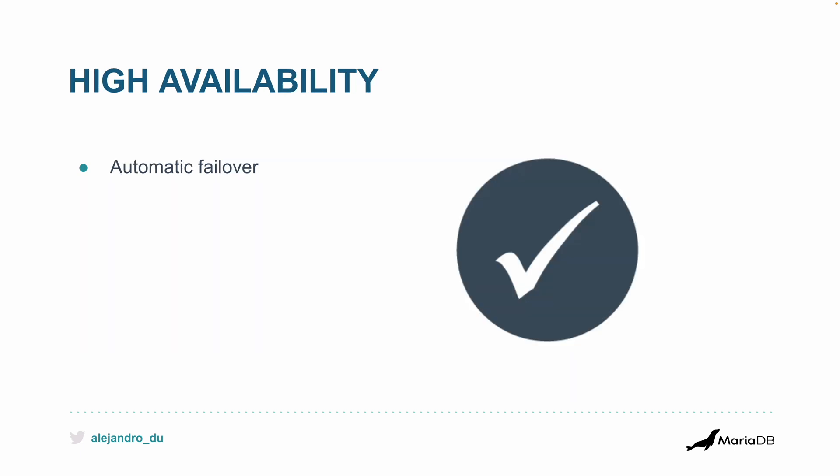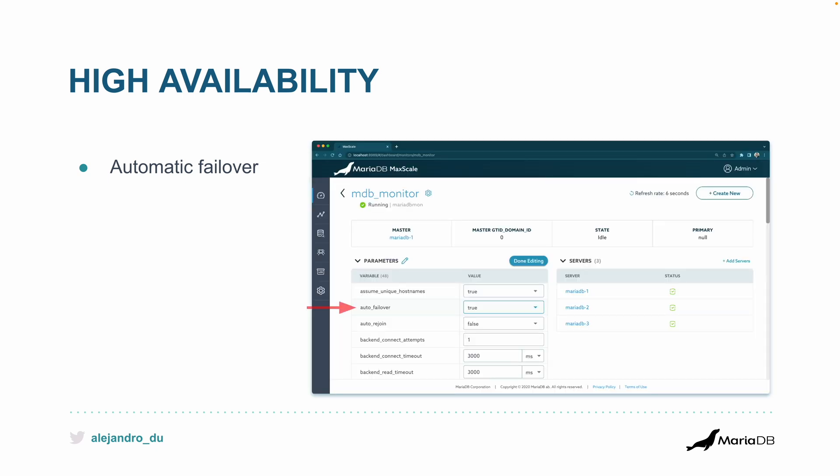On the high availability front, we have automatic failover. When a primary node fails, another one gets promoted as a new primary. That's configured in the GUI — just set 'failover' to true, and MaxScale can do automatic failover for you.